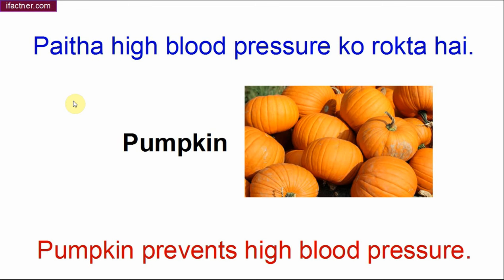Aage aage — pumpkin, yaani bada kaddu ya petha. Petha high blood pressure ko rokta hai. America wagaira mein Halloween ka tyohaar hota hai jisman woh pethe ko andar se nikal ke uski ajeeb-o-ghareeb shaklen banate hain. Pumpkin prevents high blood pressure.